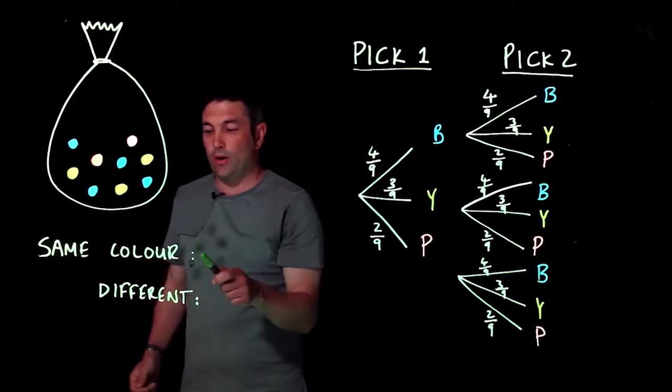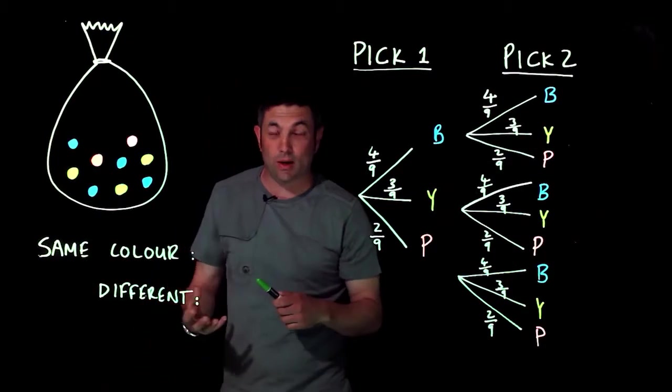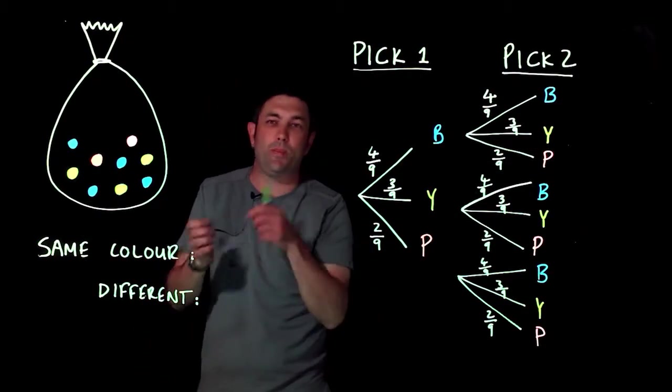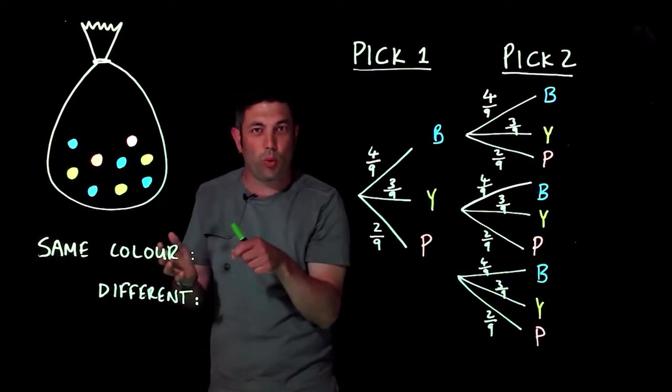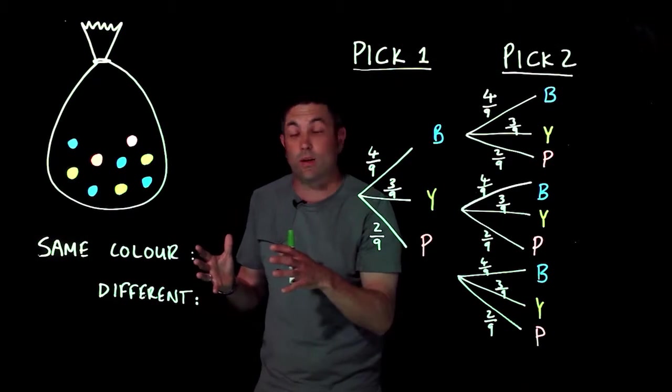Now we're asked to find the probability of getting the same color in two picks. Remember when we pick, it's going to say in the question we replace the counter we picked out, so that's pretty important as far as this goes, but it will say in the question.